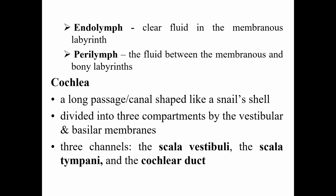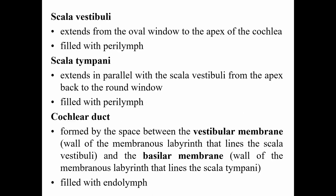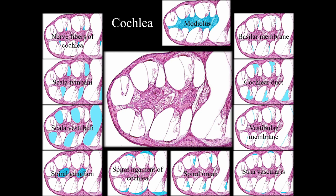The cochlea is a long canal shaped like a snail's shell, divided into three components by vestibular and basilar membranes: the scala vestibuli, the scala tympani, and the cochlear duct. The scala vestibuli extends from the oval window to the apex and is filled with perilymph. The scala tympani extends in parallel from the apex back to the round window and is also filled with perilymph. The cochlear duct, between the vestibular and basilar membranes, is filled with endolymph.